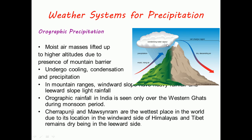Orographic rainfall in India is seen over the Western Ghats. Cherrapunji and Mawsynram are the wettest places in the world due to their location on the windward side of the Himalayas, and Tibet being on the leeward side remains dry for most of the year.